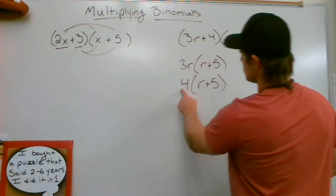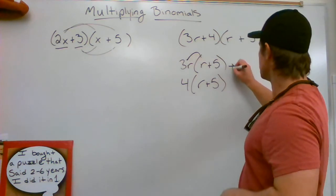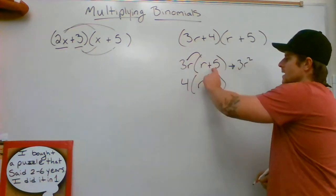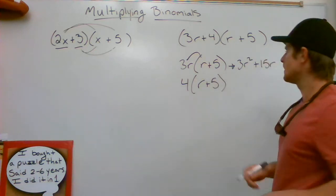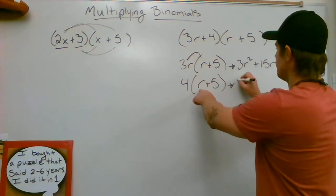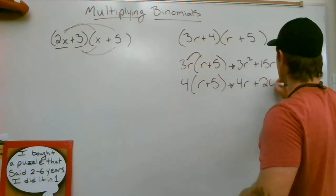3r times r gives me 3r squared, and 3r times 5 gives me 15r. Now I have 4 times r which gives me 4r, and 4 times 5 which gives me 20.